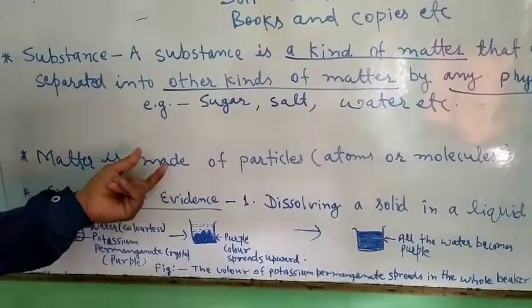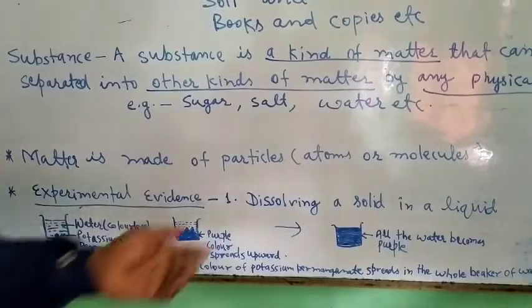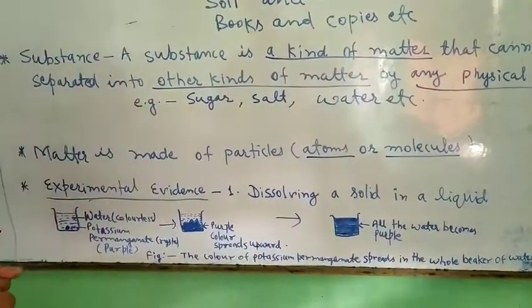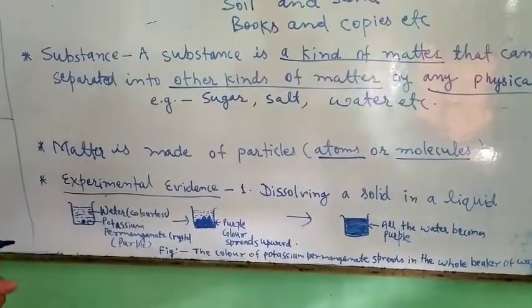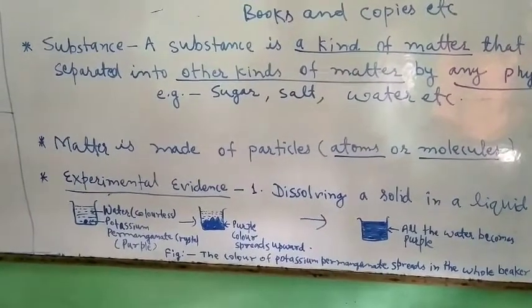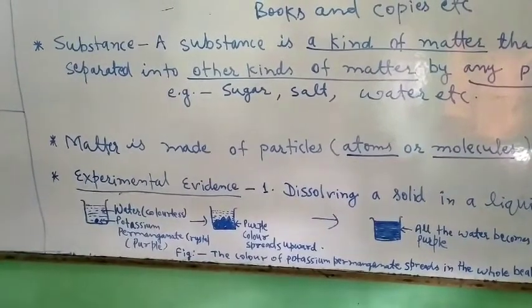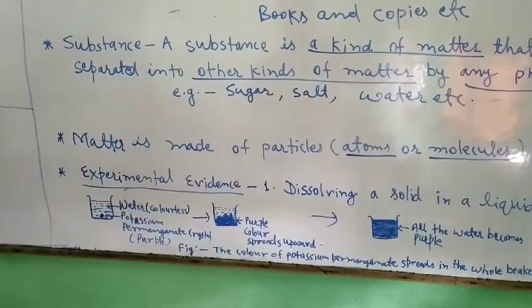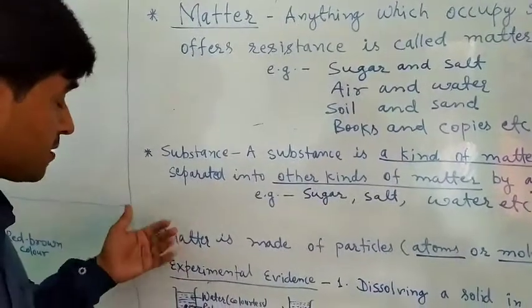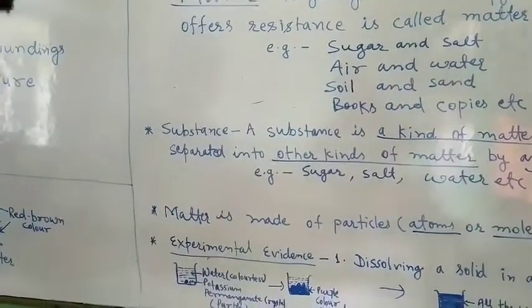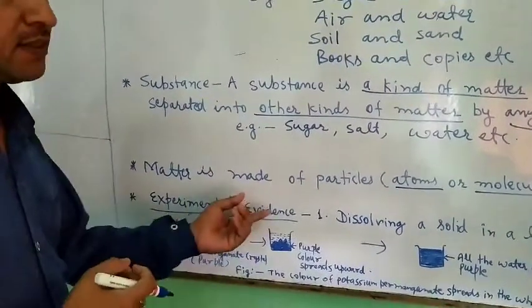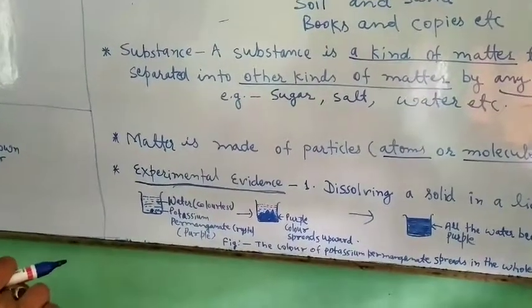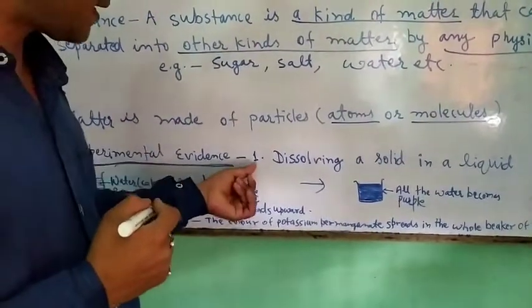Matter is made up of particles — that means atoms or molecules. Atoms are very small entities of chemical substances, and molecules are also very small entities of chemical substances. How can we prove that matter is made up of particles? These substances can be proved by experimental evidences.